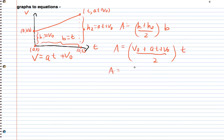So let's simplify this out. We're going to end up getting 2 v naught plus at all over 2 times t. And the area then ends up being 1 half at squared plus v naught times t.